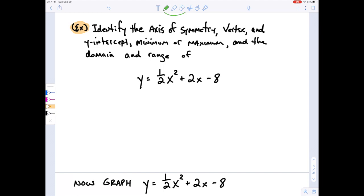So the very first thing I'm going to do is identify my axis of symmetry. So the x value is going to be negative b over 2a.